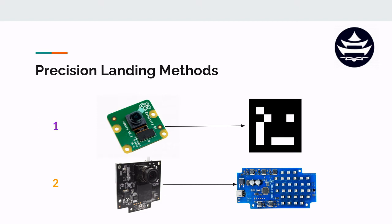With the first method, a simple camera tracks an image on the ground — this is an ArUco marker, which is some foreshadowing for what we'll be doing later in the course. With the second method, a PixyCam is fixed to the drone and tracks an IR beacon on the ground powered by a LiPo battery. The beacon emits infrared light that the PixyCam tracks using a specially fitted infrared lens.